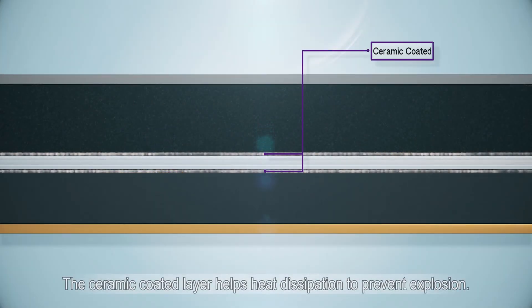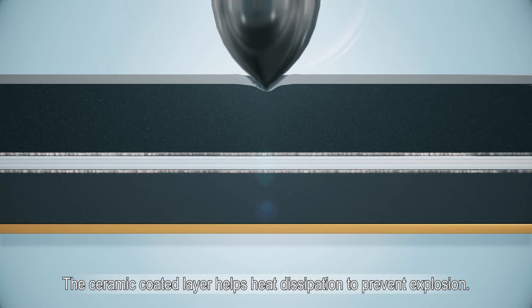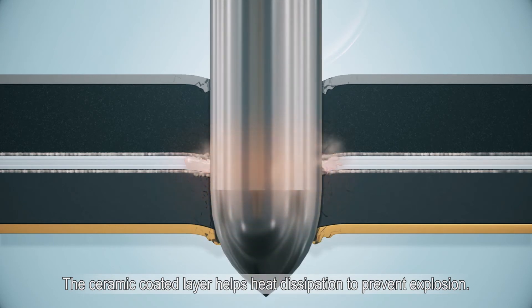The ceramic coated layer can keep the anode and cathode isolated while the nail penetrates, so that battery explosion can be prevented.